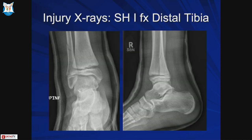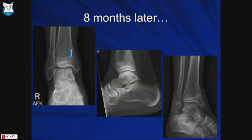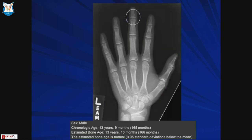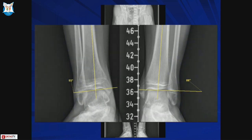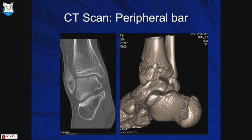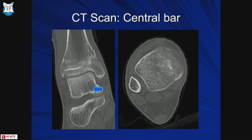Another example: a 13-year-old male with a right ankle injury eight months ago presenting with deformity and medial-sided pain. Initial x-rays showed a Salter-Harris 1 of the distal tibia; eight months later there is growth arrest. Looking at the contralateral side, we estimate the patient has more than two years of growth remaining. A useful rule: if the physis of the distal phalanges are open on a hand x-ray, the patient has more than two years of growth remaining.